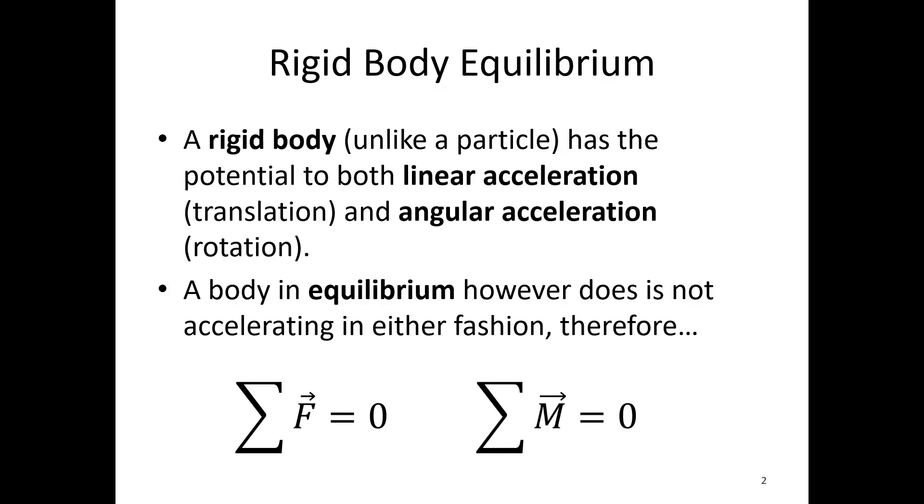Both of these are vector equations, so we can break these things down. If we look in 2D, starting with a particle we had sum of forces in the x and sum of forces in the y. We broke our forces into x and y components and summed up all those components. We're simply adding a moment equation as well.